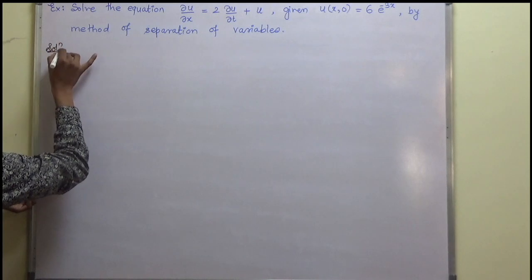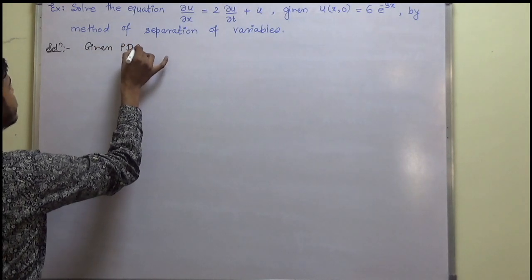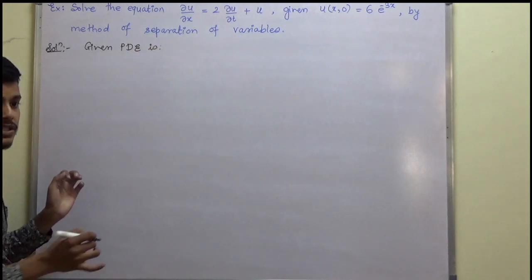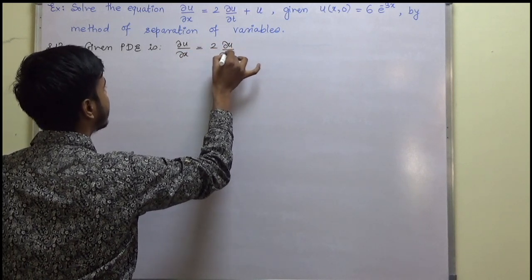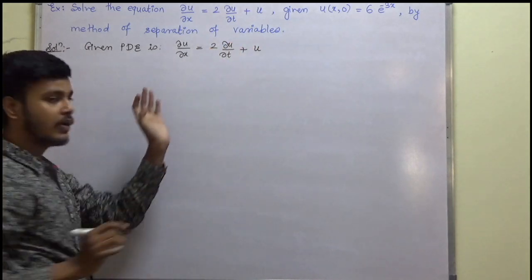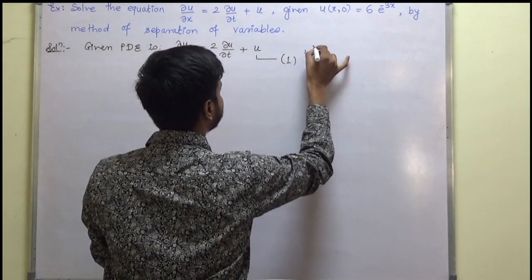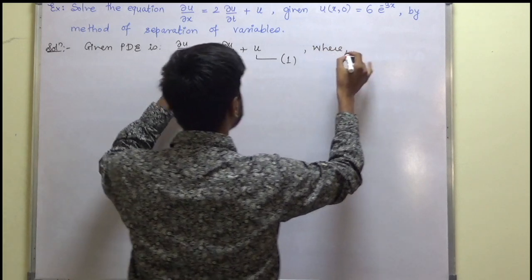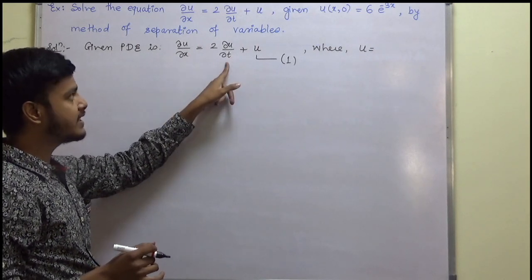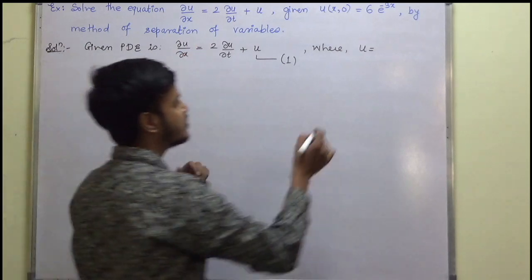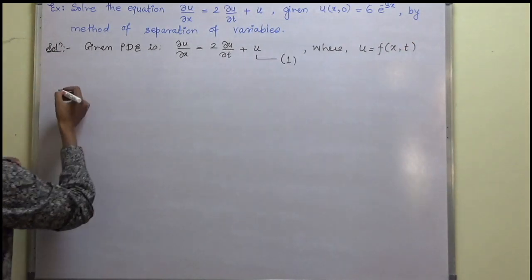The given partial differential equation is: del u by del x is equal to 2 del u by del t plus u. This is equation number one. Here u is a function of x and t — we know this because we have derivatives of u with respect to both x and t.